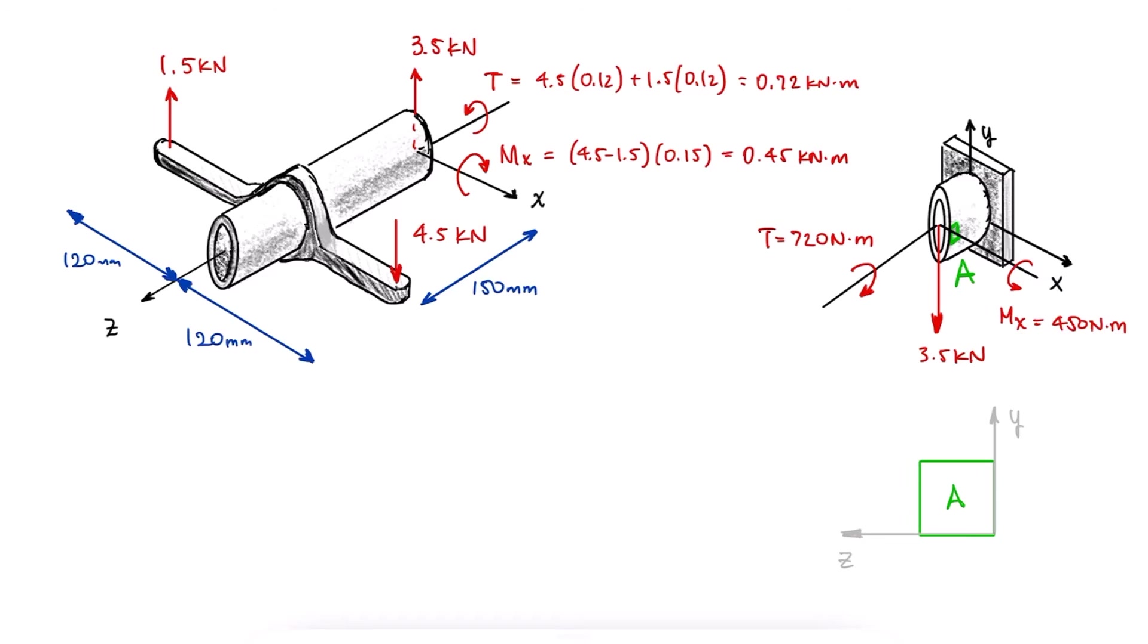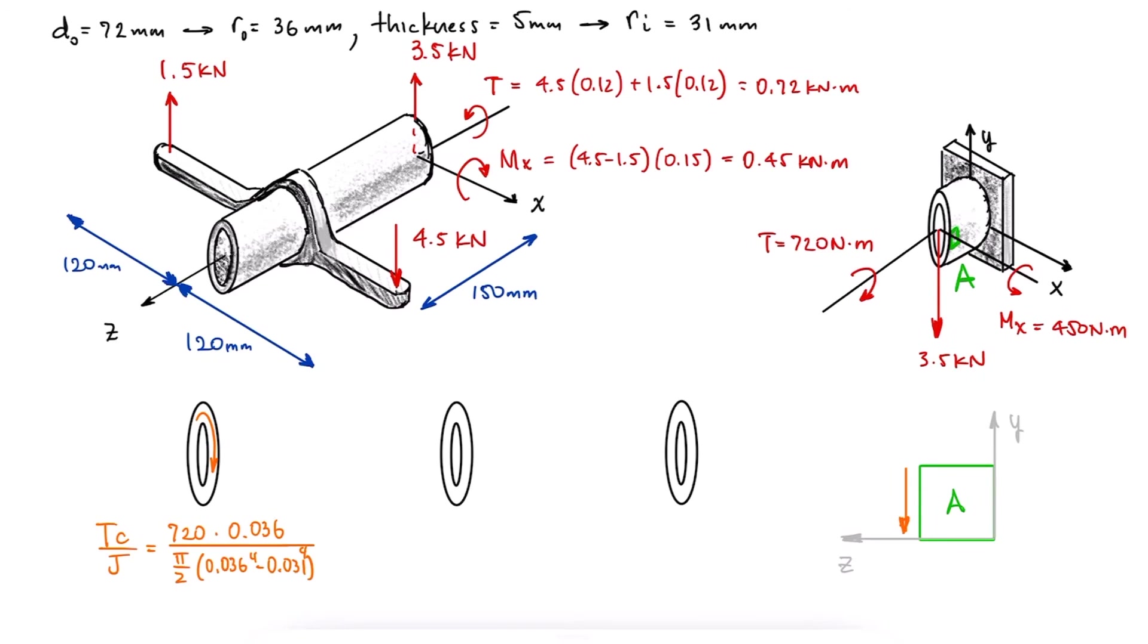Stress element A would be subjected to a torsional shearing stress, a transverse shear stress due to the 3.5 kN load, and the zero normal stress due to bending, since A is located on the neutral axis.